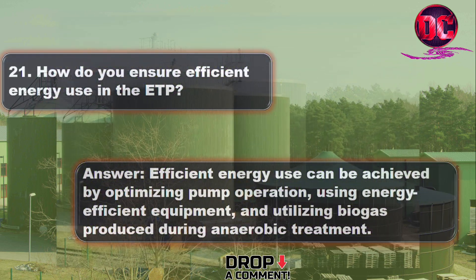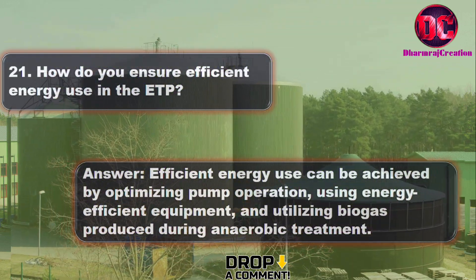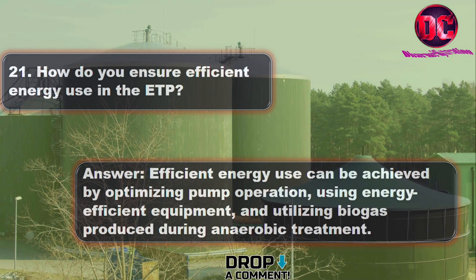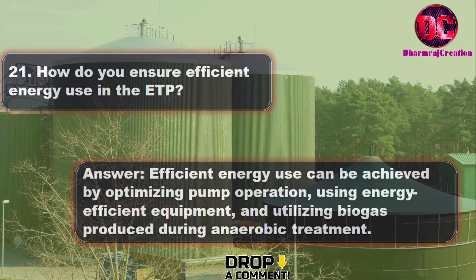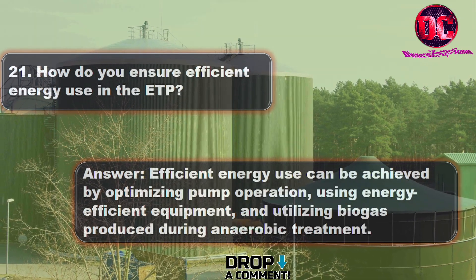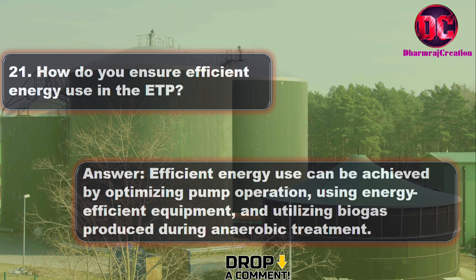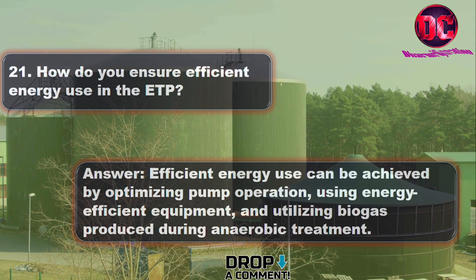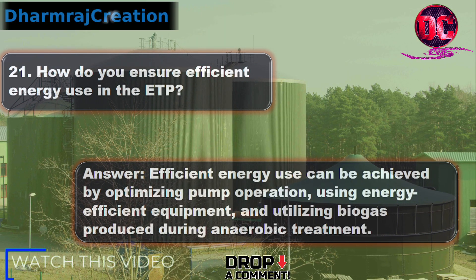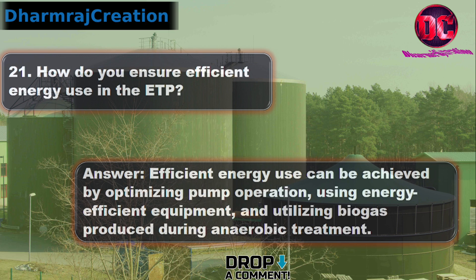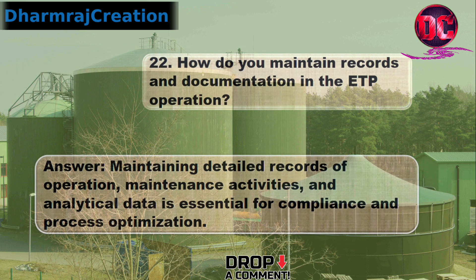21. How do you ensure efficient energy use in the ETP? Answer: Efficient energy use can be achieved by optimizing pump operation, using energy-efficient equipment, and utilizing biogas produced during anaerobic treatment.